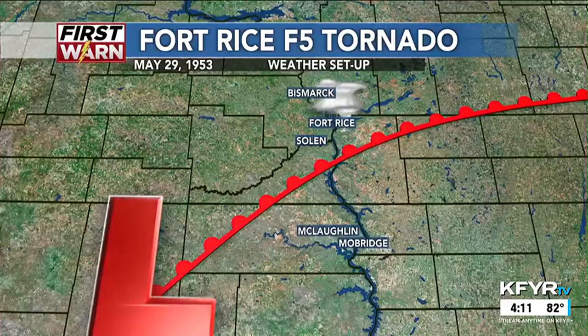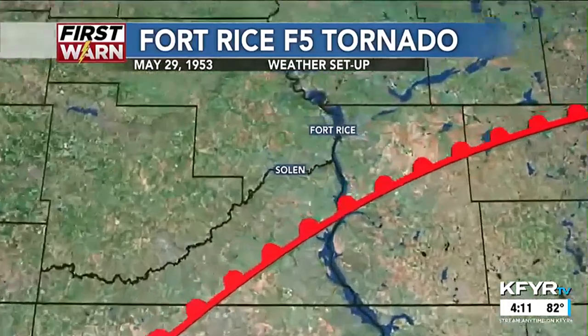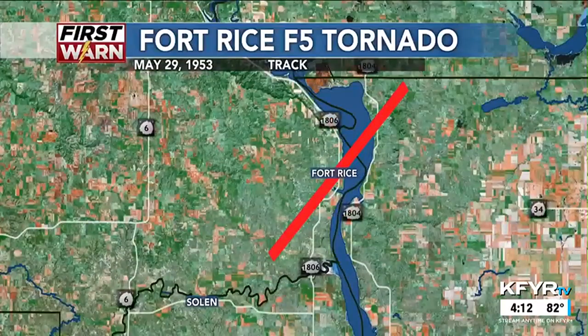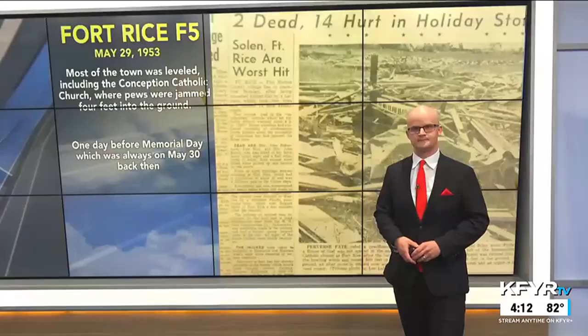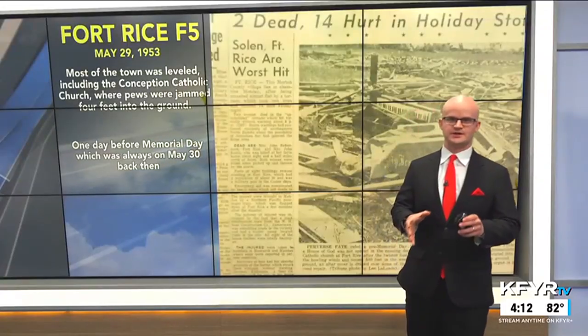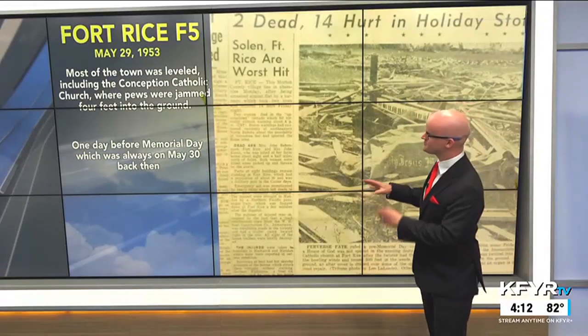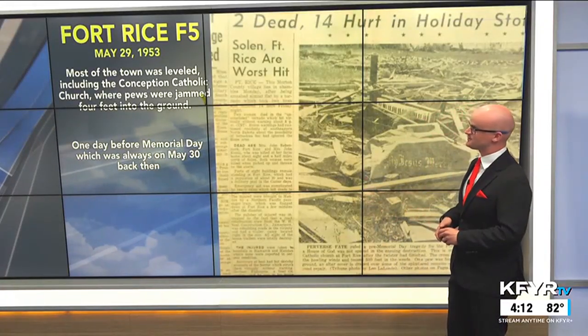The Fort Rice tornado impacted parts of Morton and Emmons counties and crossed Lake Oahe. You might have thought tornadoes would stop at the river — that's something many of us heard growing up — but this 1953 tornado is a great example of a high-end violent tornado that went right across Lake Oahe without being impeded one bit.